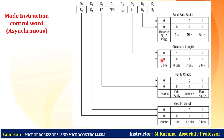Bits D2-D3 (L1, L2) indicate the character length: 00 = 5 bits, 10 = 6 bits, 01 = 7 bits, 11 = 8 bits. The next two bits handle parity enable and parity type: 00 = disabled, 10 = odd parity, 01 = disabled, 11 = even parity — meaning the data has an even number of ones.